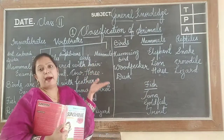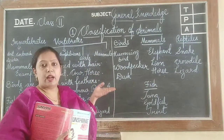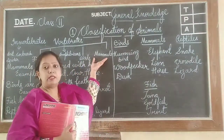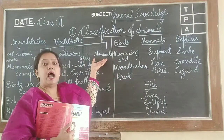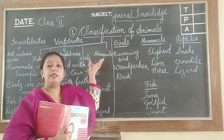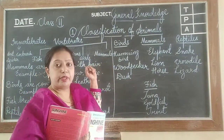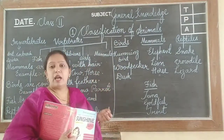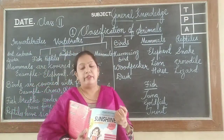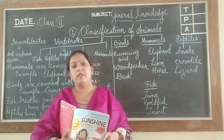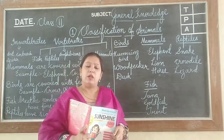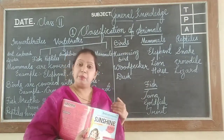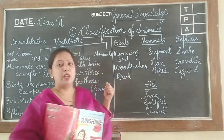Birds — parrot and eagle are examples of birds. Mammals are animals that breathe air and give birth to babies. Examples: lion, tiger, elephant, horse, cow, goat, etc. Even human beings come under mammals.